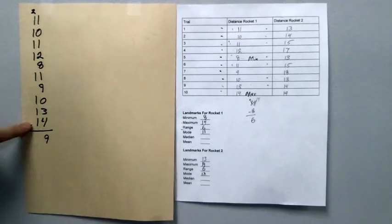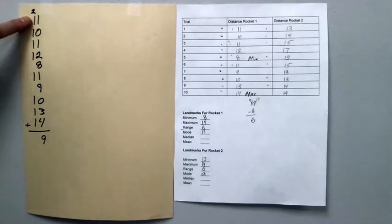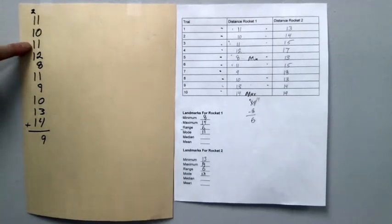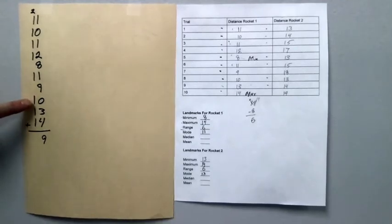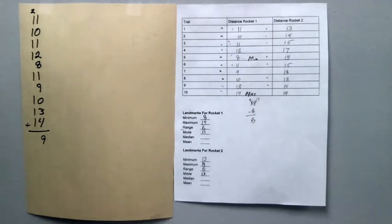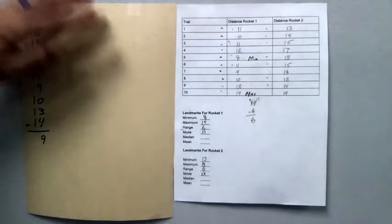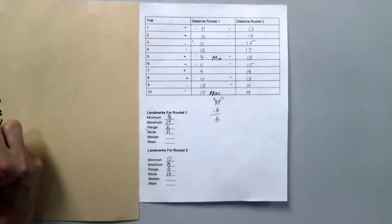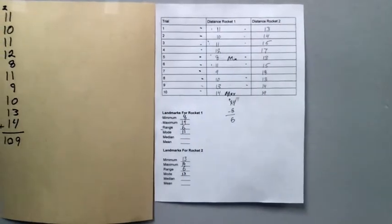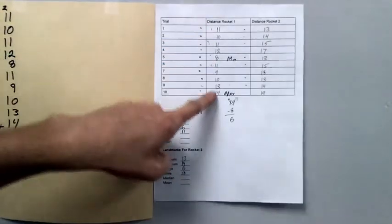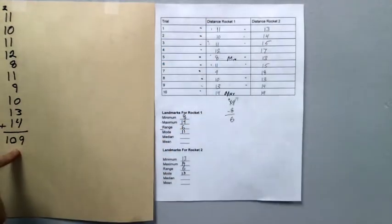Then I'll continue adding, going down. 2 plus 1 is 3, plus 1 is 4, plus 1 is 5, plus 1 is 6, plus 1 is 7, plus 1 is 8, plus 1 is 9, plus 1 is 10. If only all of my addition problems were so easy. So, I will record my 10 down there. And my grand total now, for all of my rocket flights, was 109 feet. But I'm not done with mean.